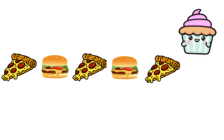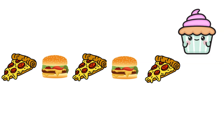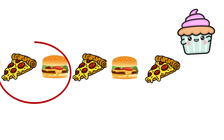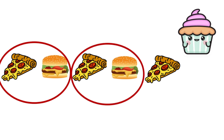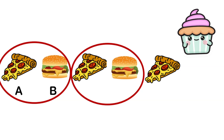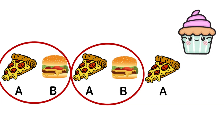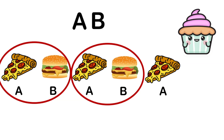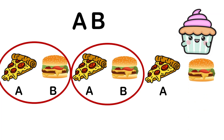Hey pattern detectives! I have a cool trick to help us crack the pattern. We're going to give each part of the pattern a code name so we can identify the type of pattern we're working with. We have a pizza and a burger — we'll name the pizza A and the burger B. So our pattern is A, B, A, B — the pattern name is AB. Now we have an A, a pizza. What's going to come next? You're right — it's a burger!